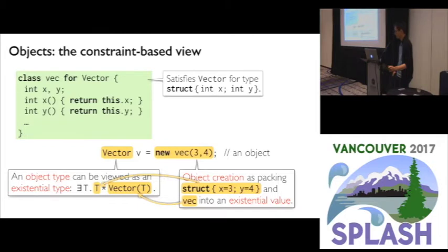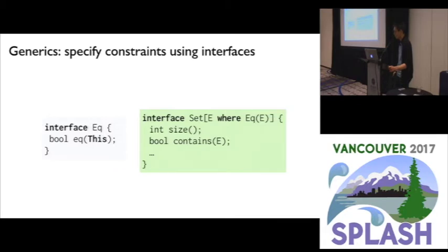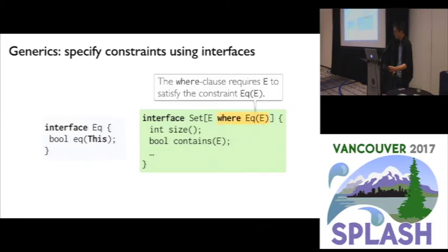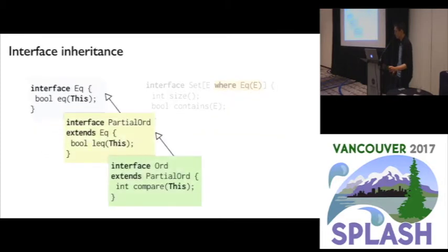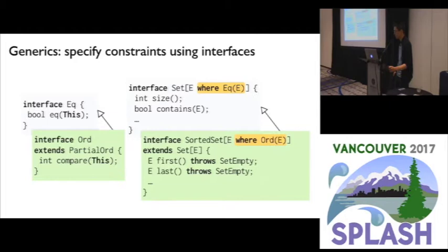In addition to objects, there is another natural use of interfaces to define constraints and classes to satisfy constraints: generics. For a generic set abstraction — by definition a collection of distinct objects — we need a definition of distinctness. Similar to how Haskell type classes constrain types, in Familia we can use a WHERE clause, WHERE EQ of E, to require a notion of equality for the element type E. Interfaces can be extended; interface ORD transitively extends EQ and expresses a total ordering on the this-type. We can then define interface SortedSet using a WHERE clause constraint ORD of E.